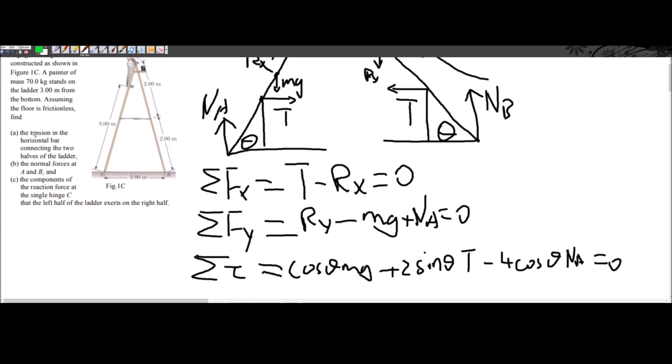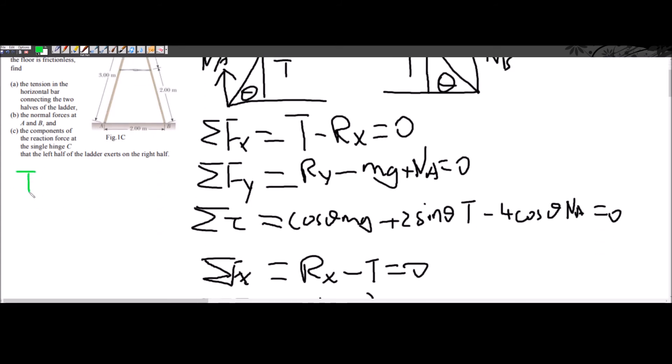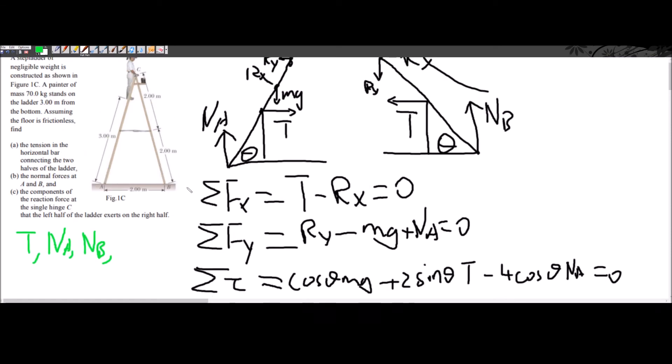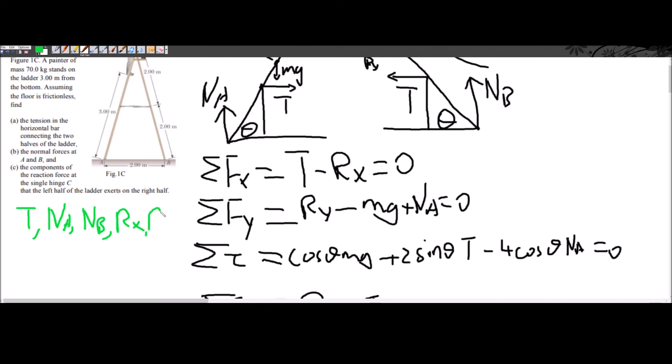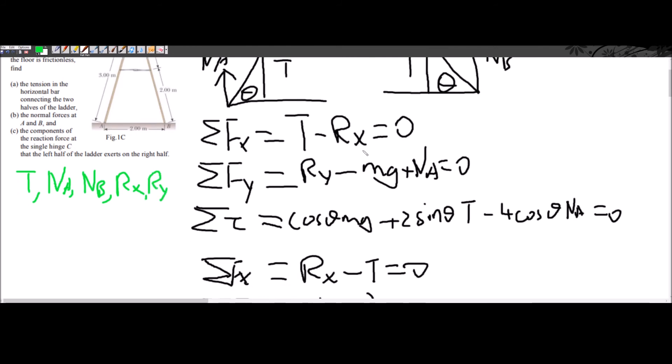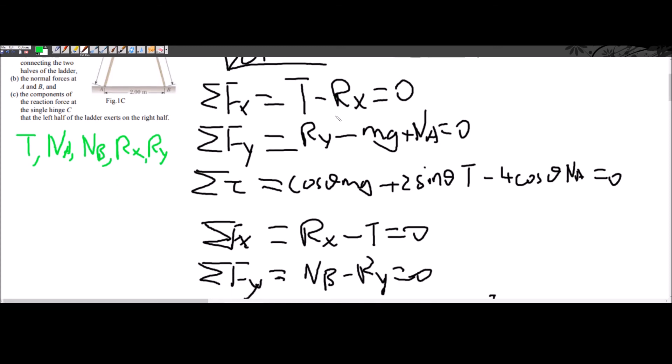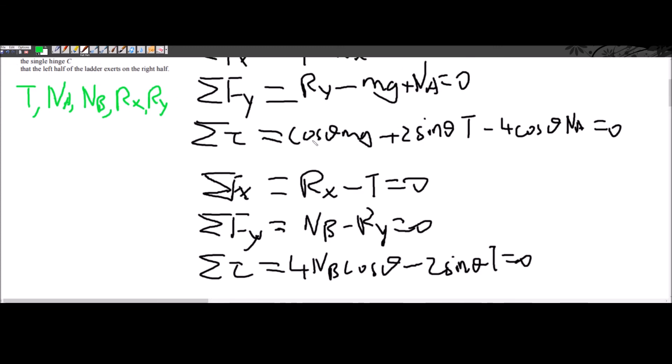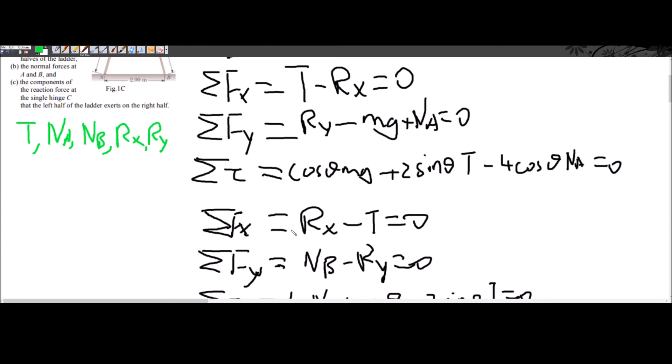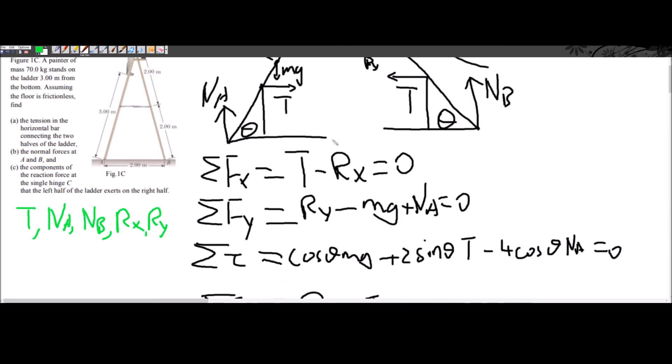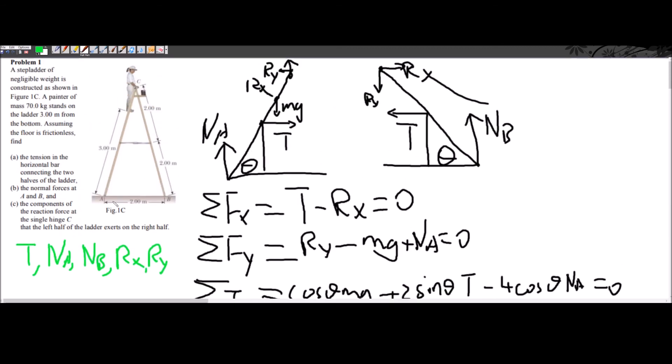Now the question asks you to solve for tension. So if you want to find tension, if you want to find normal force a, also normal force b, also the reaction forces on the left side. So it's rx and ry respectively. Okay, so here we have some unknowns. We have T unknown, we have effectively five equations in total, because this one and this one are basically the same equation. So we can cross out one of them, and just use these five to solve. But we need to know theta first before we can solve.